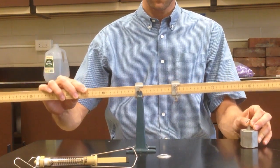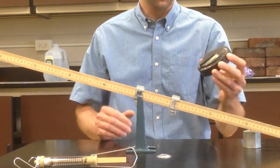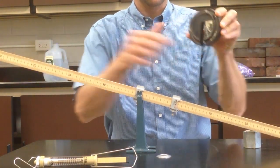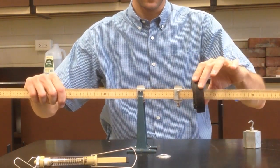The other option for a weight is one of these kinds. If you use this type, this little groove right here sits right on top of the meter stick, and you can slide it to whatever distance you need.